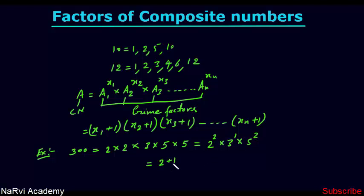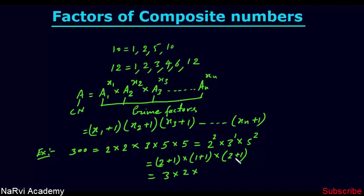So we calculate (2+1) × (1+1) × (2+1) = 3 × 2 × 3 = 18. So now we know the number 300 has 18 factors.